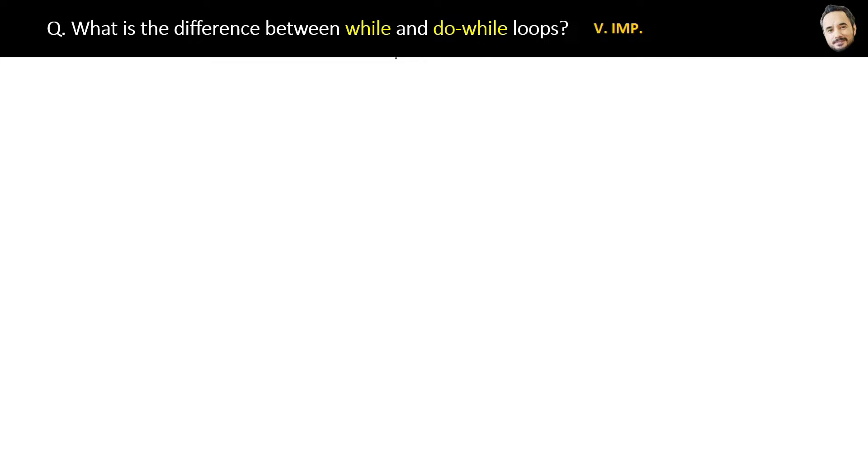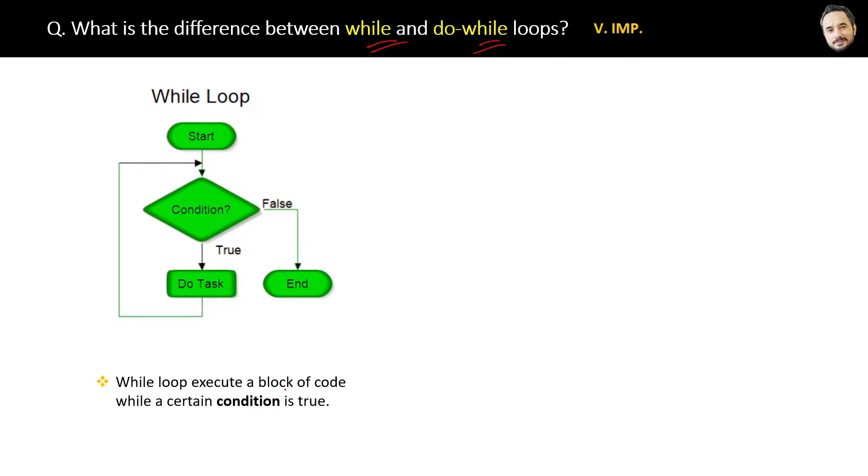What is the difference between while and do-while loops? A very important question asked in many interviews. We already know the while loop. Here is the diagram. The definition is that a while loop executes a block of code while a certain condition is true. But if the condition is false, the loop will not execute even a single time.